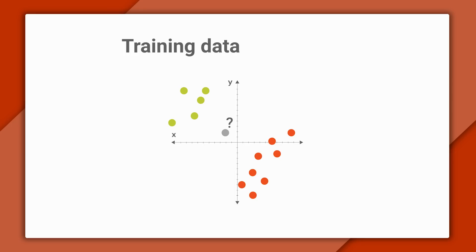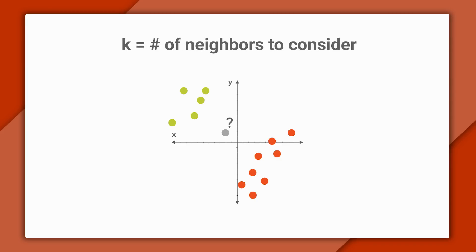One way is we could randomly break the tie. But there's another way, and that's where k comes in. k is the number of neighbors we consider when making our prediction. If k was 1, we'd just look at the closest training point. But if k was 3, we'd look at the 3 closest. In this case, two of those are green and one is red. To predict, we could vote and predict the majority class. Now there's more detail to this algorithm, but that's enough to get us started.